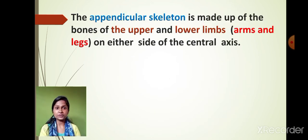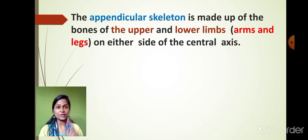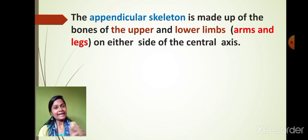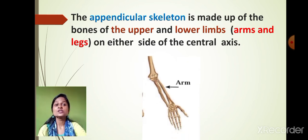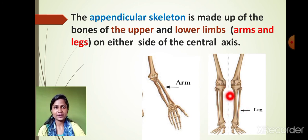In the appendicular skeleton, it is easy to identify the parts attached to the central body. Our hands are attached to the central part, so they come under the appendicular skeleton. Our legs are also attached to the central part. So legs and arms — including the knee, thighs, and leg — all come under the appendicular skeleton.